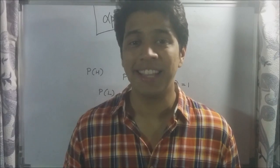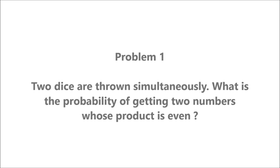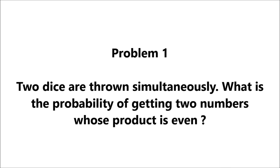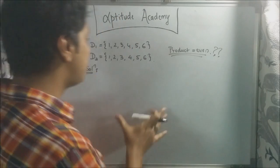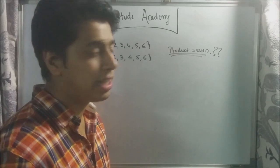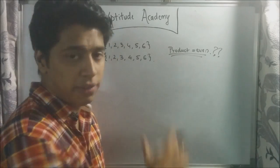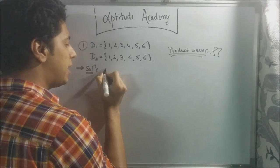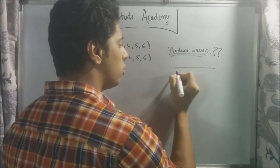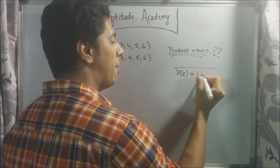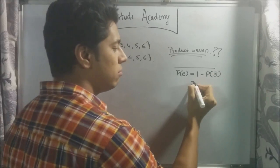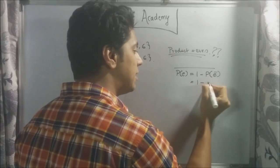Now that we know this property, let's move on to our first sum. Problem one: two dice are thrown simultaneously. What is the probability of getting two numbers whose product is even? We've got two dice thrown simultaneously. They're asking us what is the probability that the product of those two numbers is going to be even. From the previous property, the probability of it being even is equal to one minus the probability of it not being even — which is odd. So one minus P of odd.